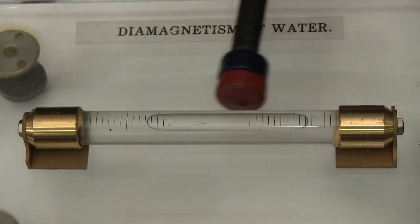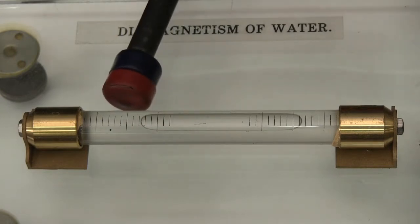If I now move that magnet to the other side of the spirit level, you'll see that the effect is reversed. So in both cases, the bubble appears to be moving towards the magnet.